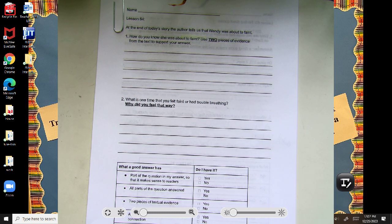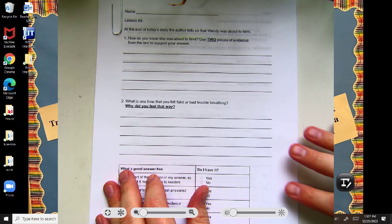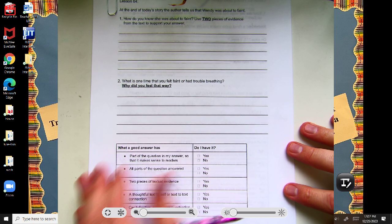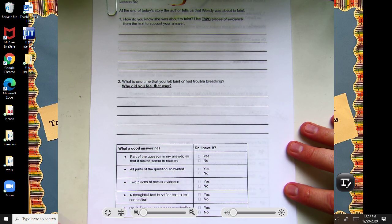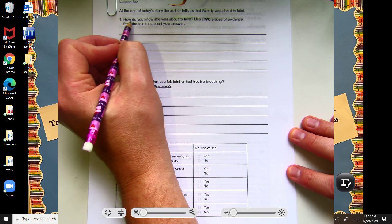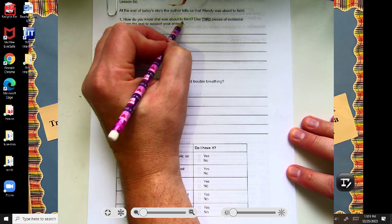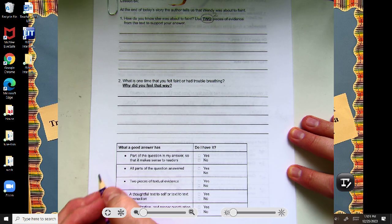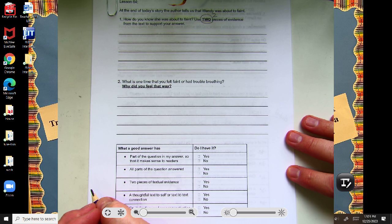All right, scholars, here we are looking at our packet for lesson 64. At the end of today's story, the author tells us that Wendy was about to faint. Question number one, how do you know she was about to faint? Use two pieces of evidence from the text to support your answer.